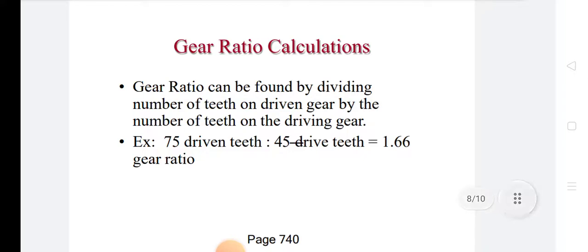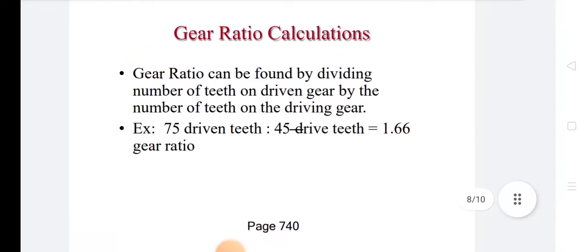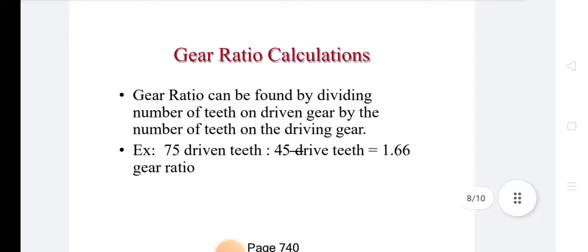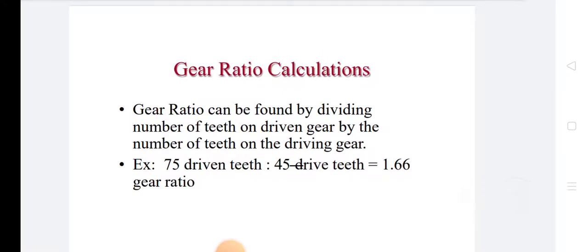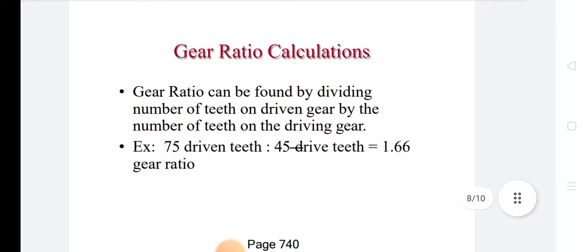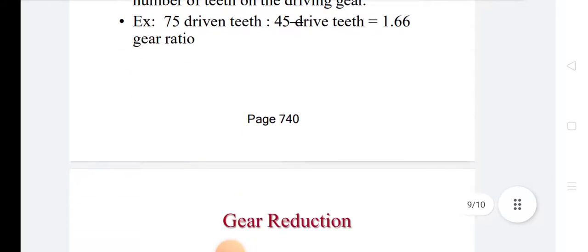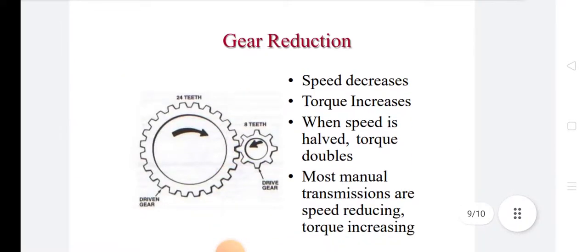Gear ratio is calculated as gear ratio can be found by dividing number of teeth on driven gear by the number of teeth on driver gear. Example, 75 driven teeth, 45 driver teeth is equal to 1.66 gear ratio.